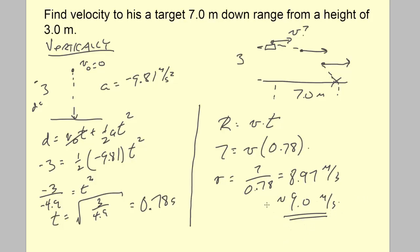These are probably the easiest of the projectile problems — the two-dimensional problems with vertical and horizontal motion. Even though they're not terribly difficult, they reinforce the essential way of thinking: you have to think about what's happening vertically, and we usually do that first.